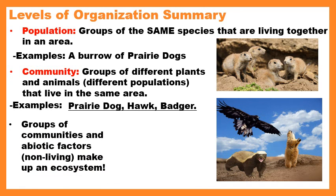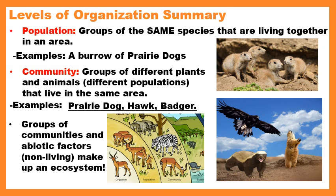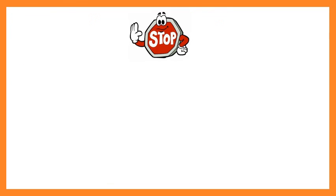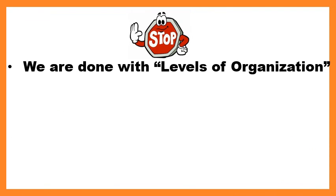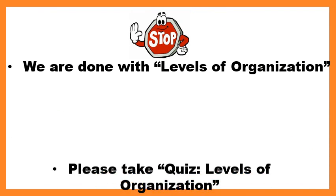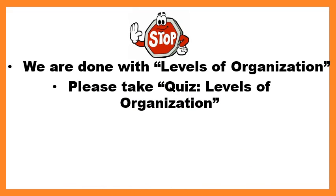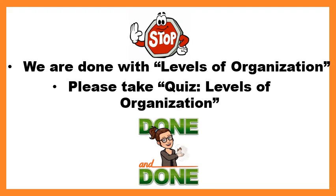Groups of communities plus abiotic factors — living and non-living things together — make up an ecosystem. Remember, all these levels nest together. We are done with Levels of Organization — go ahead and take that quiz. I recommend replaying the video one more time before you do. When you're finished, congratulations — you are done with your last Monday of summer school, and I'll see you back here tomorrow.